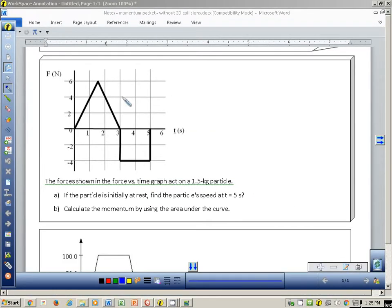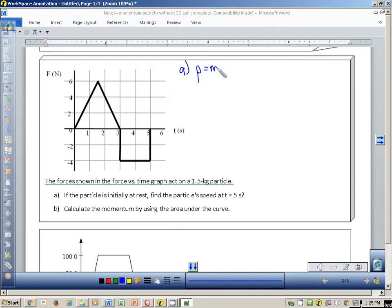If we look at this graph right here, when we do the force times the time, if it says, you know, like we have a one and a half kilogram particle and the particle is initially at rest, find the particle speed at a time of five seconds. First of all, if we're going to work on A, we're going to have to recognize that momentum is mass times velocity. Well, I have this thing's mass. It's 1.5 kilograms. It says so right here. And it says that it is at rest.